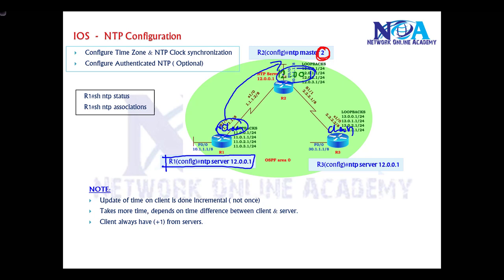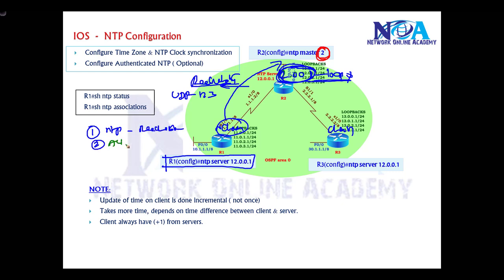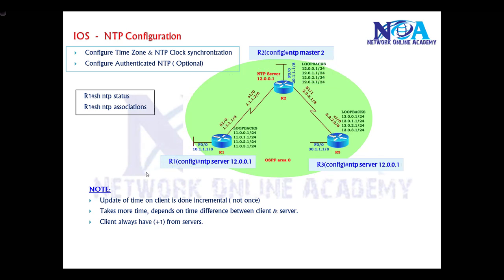The clients need to refer to the server. Here I'm using the loopback address 12.0.0.1 as the NTP server address. Make sure you have IP reachability to this loopback because NTP uses unicast on UDP port 123. If you have ACLs configured in the transit network, make sure they allow UDP 123 traffic. For reachability, I'm going to configure OSPF and advertise all interfaces. The client command is simply: NTP server 12.0.0.1.